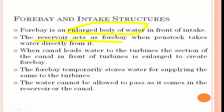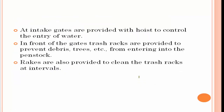The forebay temporarily stores water for supplying the turbine. It acts like a temporary storage so that water cannot be allowed to pass directly from the reservoir or canal to the turbine without regulation. That is the forebay and intake structure — it is a temporary storage system.